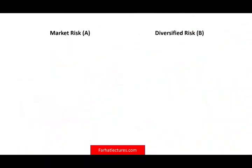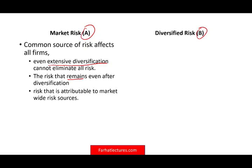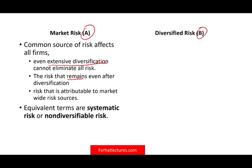We have two types of risks. Market risk — common sources of risk that affect all firms, such as the business cycle, inflation, and interest rates. Even with extensive diversification, you cannot eliminate those risks. Market risk is not diversifiable; if interest rates go up for all companies, it doesn't matter how many companies you're invested in. This risk remains even after you diversify. Another term for this risk is systematic risk or non-diversifiable risk — systematic risk, non-diversifiable risk, and market risk all mean the same thing.